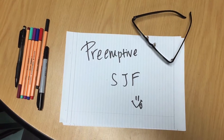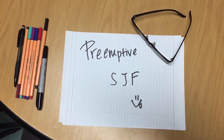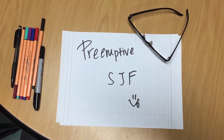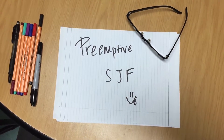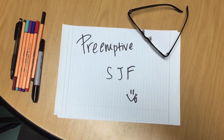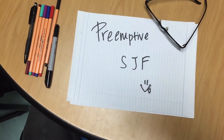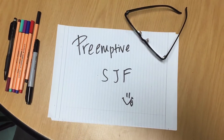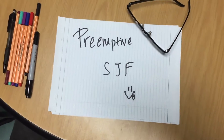Hello guys, today I'm going to teach you all about SJF. SJF stands for Shortest Job First. There are two types of SJF: one is preemptive and one is non-preemptive. We're going to emphasize on preemptive SJF.